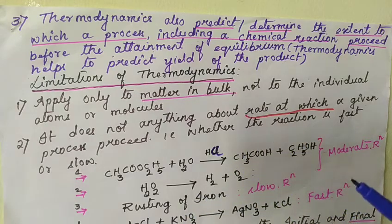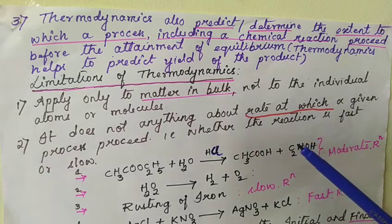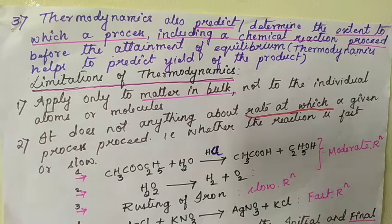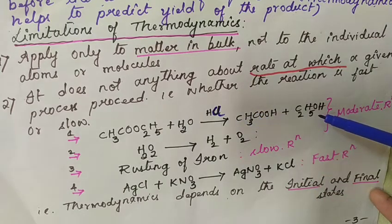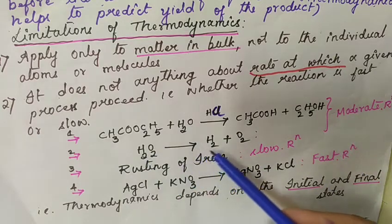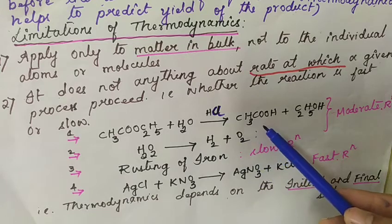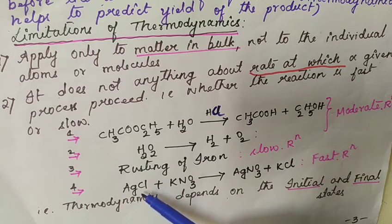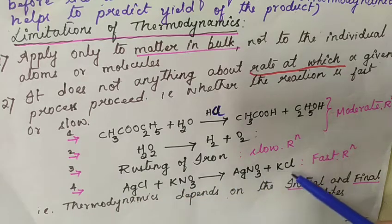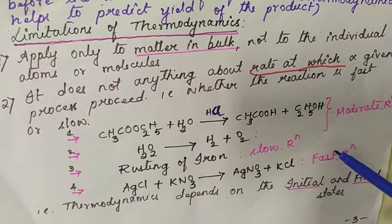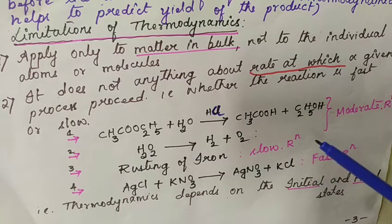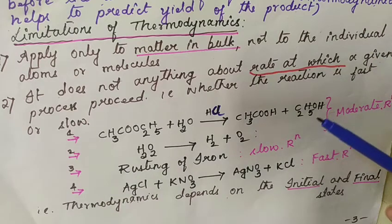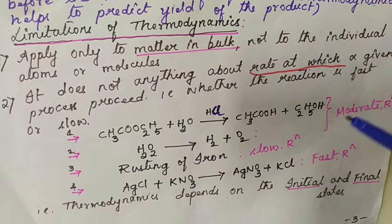The second important limitation is that thermodynamics will not say anything about the rate of the reaction — the speed of the reaction. For example: hydrolysis of methyl acetate (acid-catalyzed, giving acetic acid and ethanol) is a moderate reaction. Decomposition of hydrogen peroxide to give hydrogen and oxygen is also moderate. Rusting of iron is a very slow reaction. The ionic reaction between AgCl and KNO₃ giving AgNO₃ and KCl is very fast, since all ionic reactions are fast. The rate of reaction cannot be predicted using thermodynamics — that is why we use chemical kinetics.